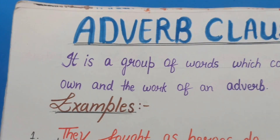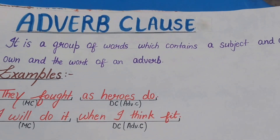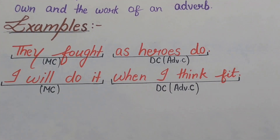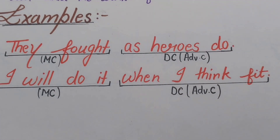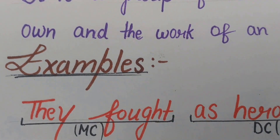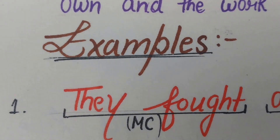Now, moving to another type — the adverb clause. An adverb clause is a group of words which contains a subject and a predicate of its own and does the work of an adverb. Example: 'They fought as heroes do.' In this, 'they fought' is the main clause and 'as heroes do' is the dependent adverb clause, depending on the main clause.